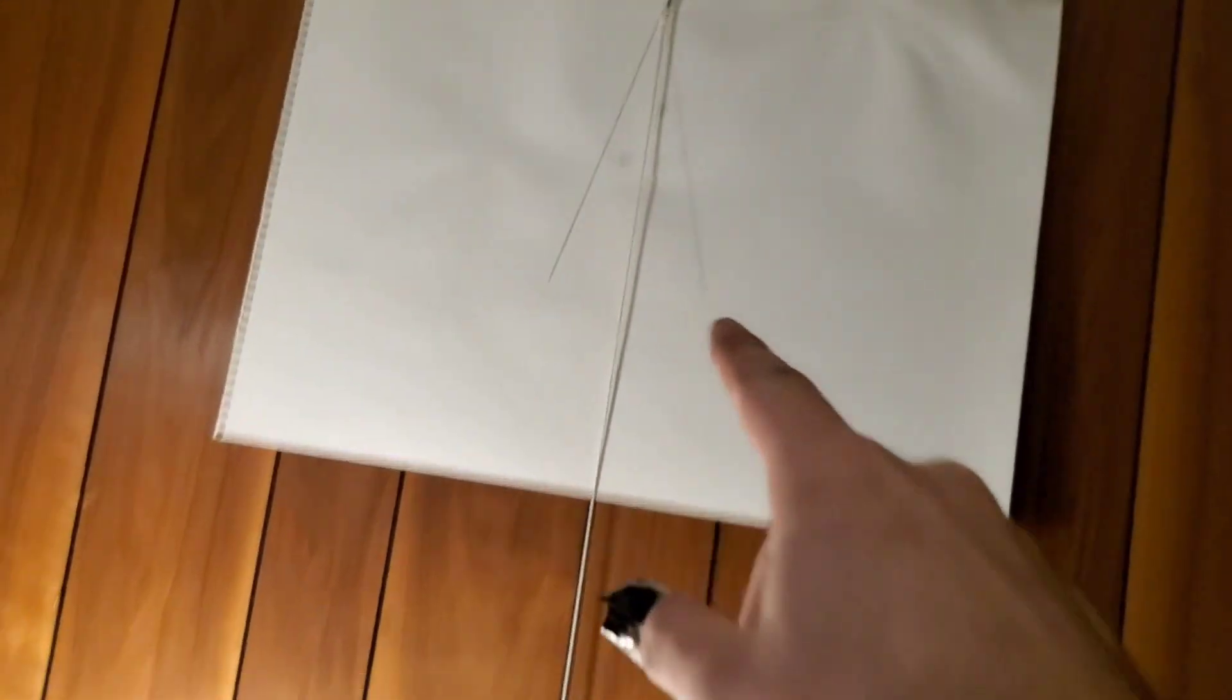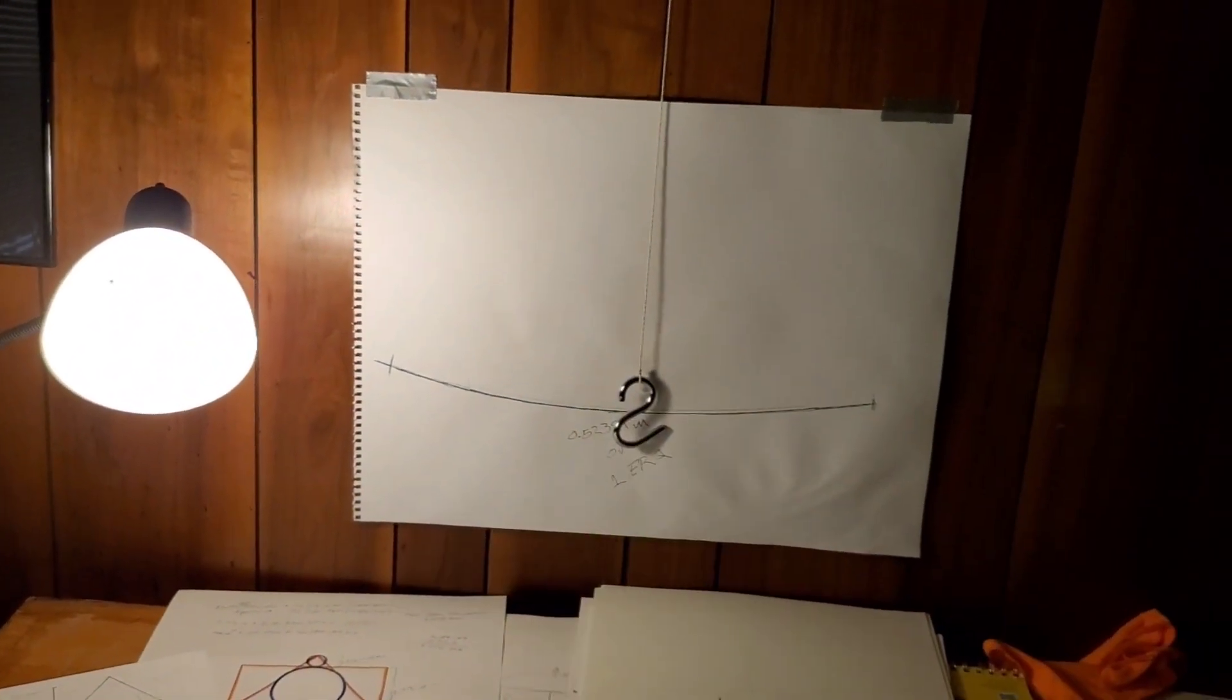If we create a one-meter-long pendulum swung at 30 degrees, the distance that pendulum travels equals one second.